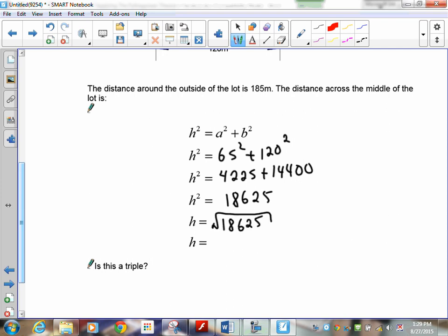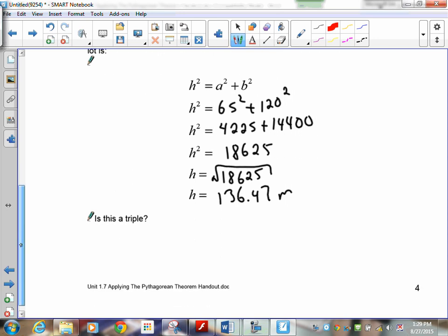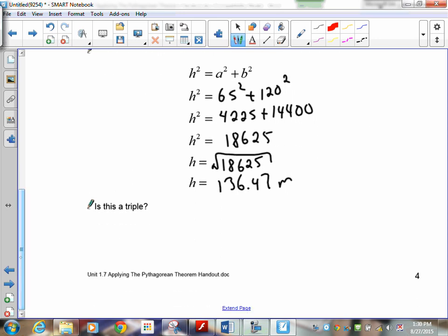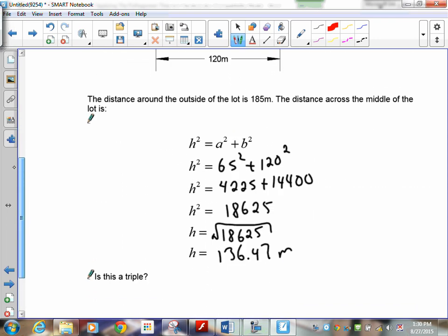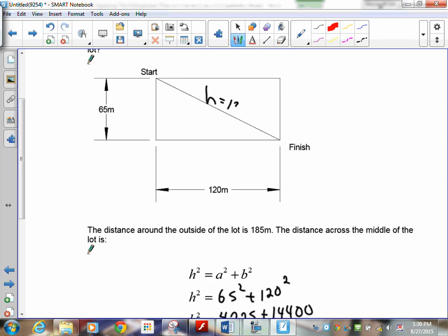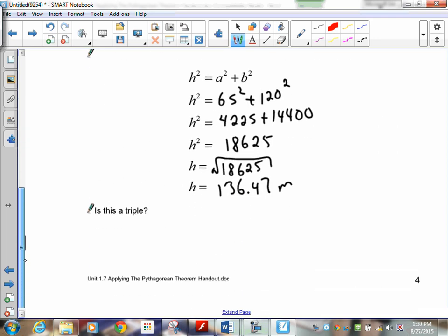Which means this is 136.47 meters. That's the distance across the yard. Now, just as a quick question, is it a triple? Well, in order to be a triple, all the numbers have to be whole numbers. And since this is 136.47, that's a decimal. Well, that means that it can't be a triple because you have to have whole numbers.